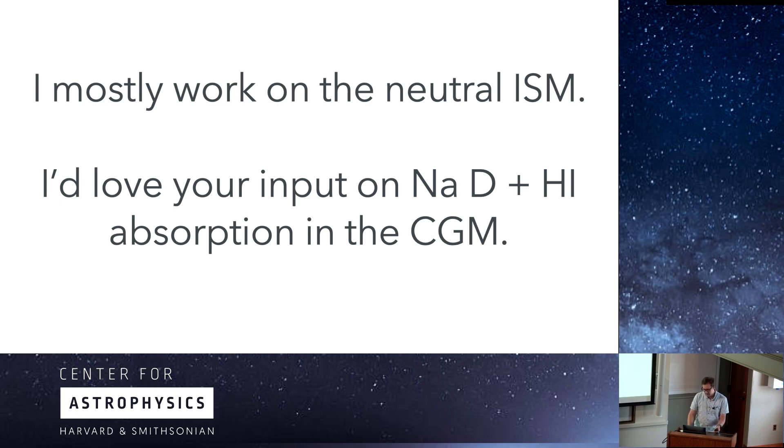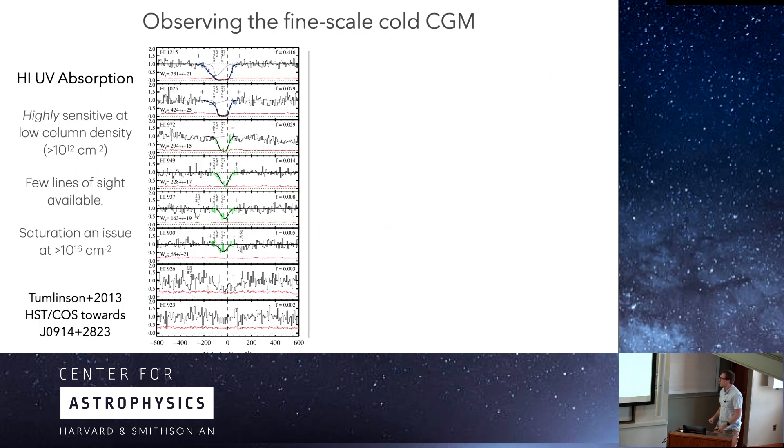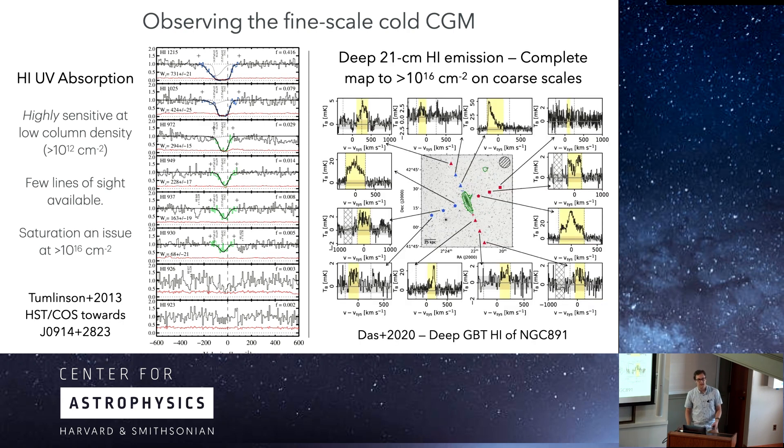So if we're observing the fine scale cold CGM, we have a couple different ways in which these observations have been done. The UV absorption for the hydrogen lines is an incredibly sensitive low column density tracer, but with absorption lines, we're limited to the number of lines of sight available, and saturation starts to become an issue at higher column densities. On the other hand, the 21-centimeter hydrogen line gives us complete maps. But to get down to the sensitivities where you can trace the bulk neutral gas in the CGM, you need a really big dish like the Green Bank Telescope, which means you're somewhat limited to coarser scales.